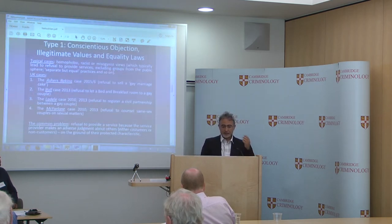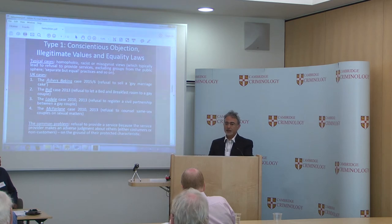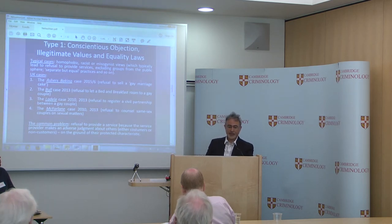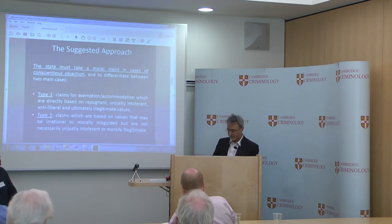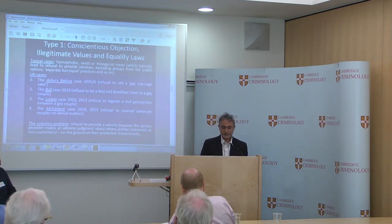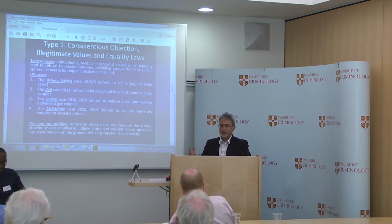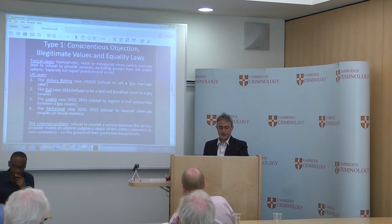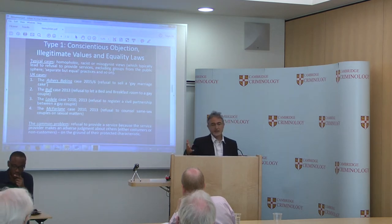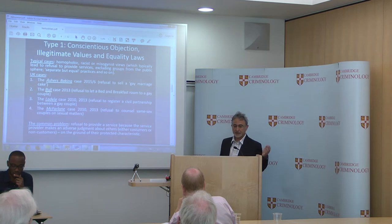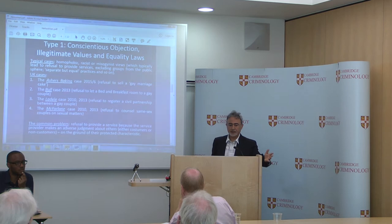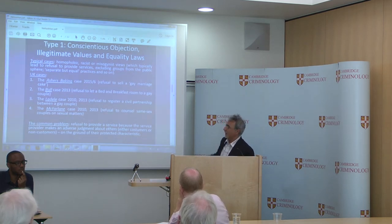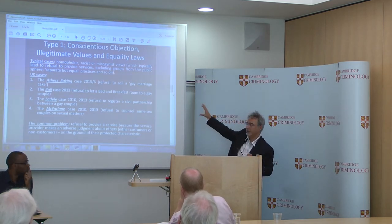I will use the case of conscientious objection to equality laws as an example of an objection of Type 1 — claims which are based on illegitimate values. The typical cases are cases in which we have homophobic, racist, misogynist views which typically lead to refusing to provide services, excluding groups from the public square, applying separate but equal practices, and so on.